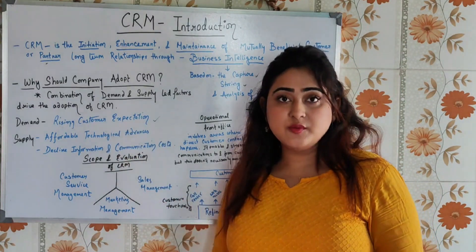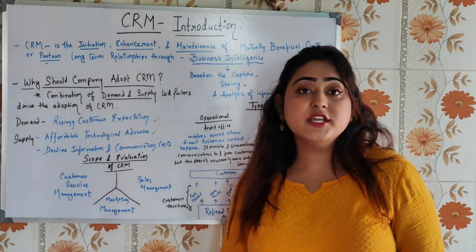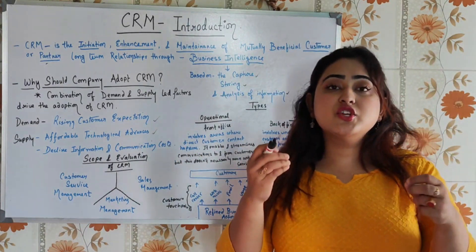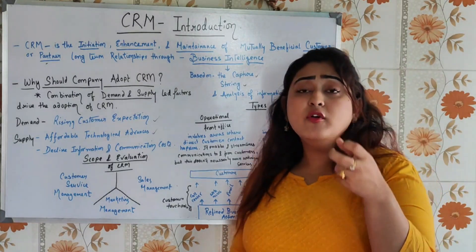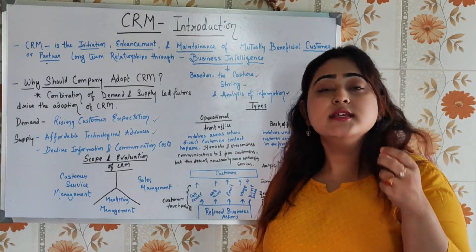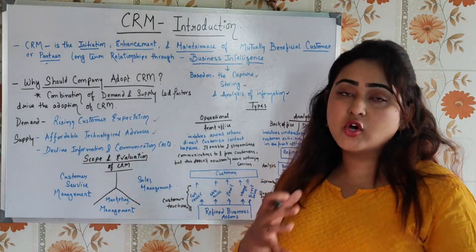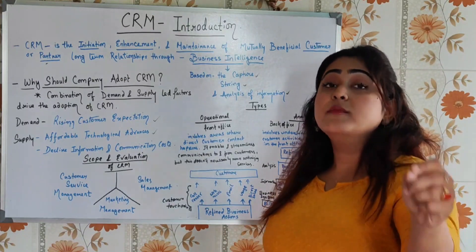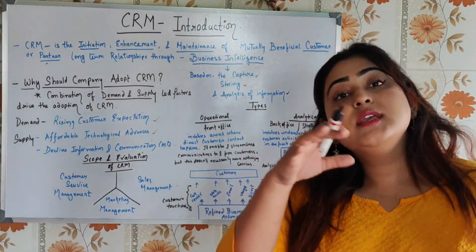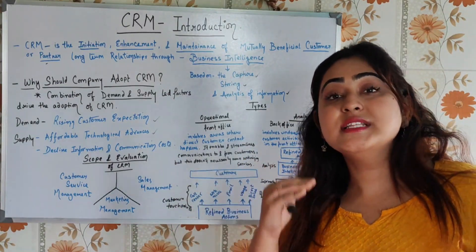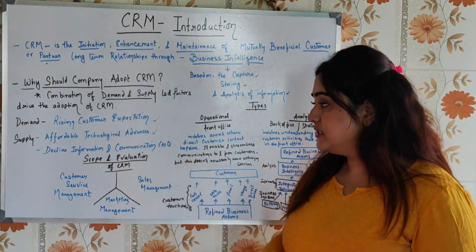On the supply side, there are affordable technological advances and declining information and communication costs. When you implement CRM, the technology cost is very low, and information storage and communication costs also decline. So this is why a company should adopt CRM — it addresses both the demand side (rising customer expectations) and the supply side (affordable technology and lower costs).